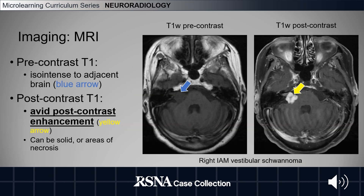Additional MRI findings include post-contrast enhancement. In our pre-contrast T1-weighted images, we see a neoplasm that is iso-intense to adjacent brain as shown by the blue arrow. In our post-contrast T1-weighted images, we see avid post-contrast enhancement as shown by the yellow arrow.